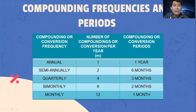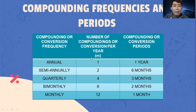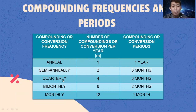These are the compounding frequencies and number of periods per year. For annual, we have 1 compounding per year. For semi-annual, we have 2. Quarterly, we have 4. Bi-monthly, we have 6. Then monthly, we have 12.